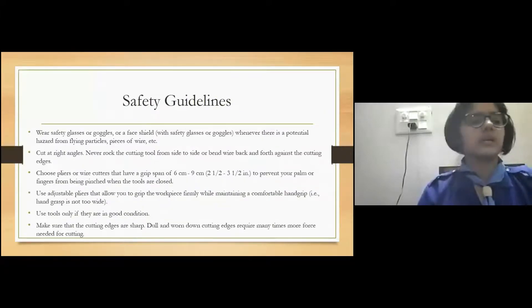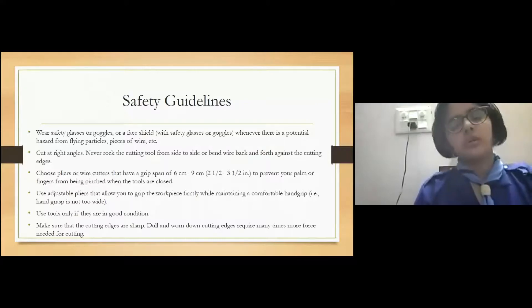Safety guidelines while you're using pliers: Wear safety glasses or goggles or a face shield with safety glasses whenever there is a potential hazard for flying particles, wires, pieces of wire, etc. Cut at right angles—never rock the cutting tool from side to side or bend wires back and forth against the cutting edge. Choose pliers or wire cutters that have a grip span of 6 to 9 centimeters (2.3 to 3.1 inches).